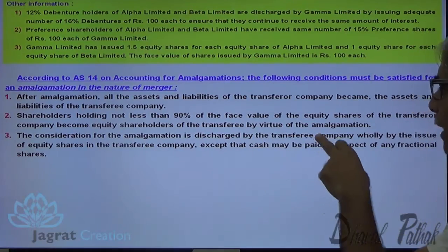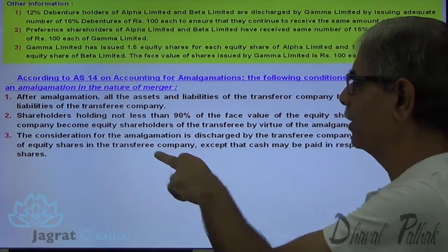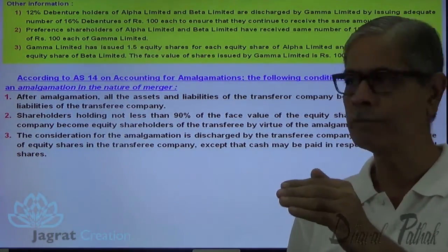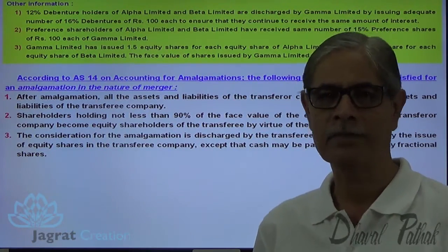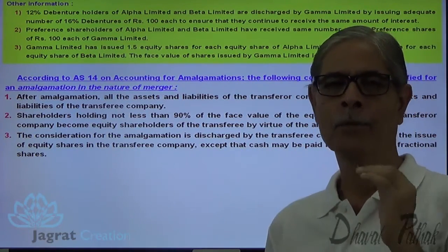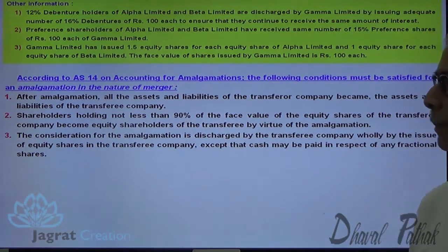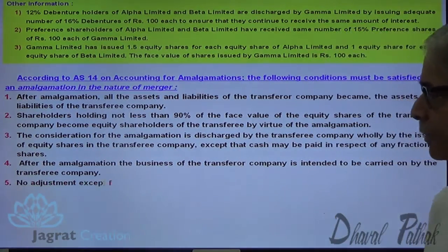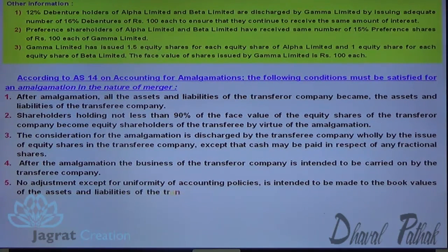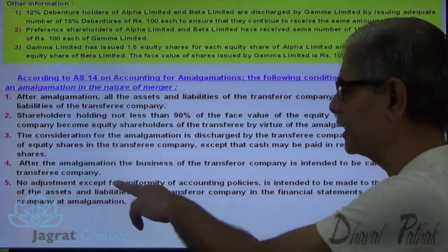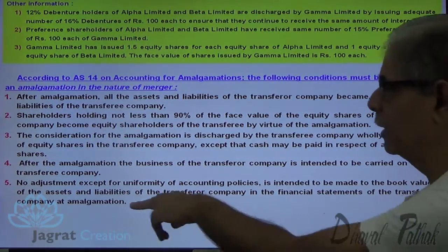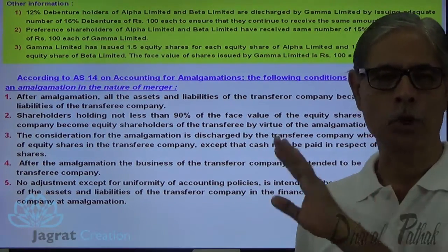The consideration for amalgamation is discharged by the transferee company wholly by issue of equity shares, except cash may be paid in respect of any fractional shares. You must have noticed that equity shareholders of Alpha are given 1.5 equity shares in exchange — shares of the purchasing company. So the purchase price has to be discharged in the form of equity shares of the purchasing company.